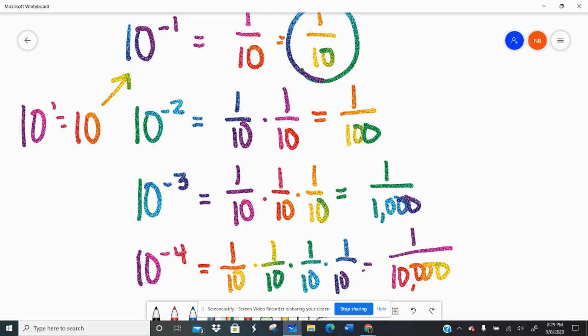So with negative powers of 10, again, we have positive numbers, but they just get smaller and smaller and smaller the bigger that negative exponent becomes. Well, technically, the smaller that negative exponent becomes if we're actually talking mathematically speaking.